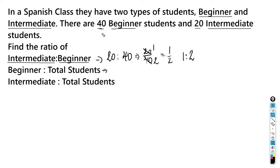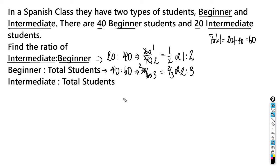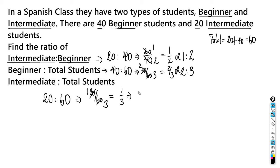The total number of students is 20 plus 40, which is 60. Beginner to total students: 40 to 60, or 40 over 60. Dividing both by 20 gives 2 to 3 at its lowest form. Intermediate to total students: 20 to 60, or 20 over 60. Dividing both by 20 gives 1 to 3.